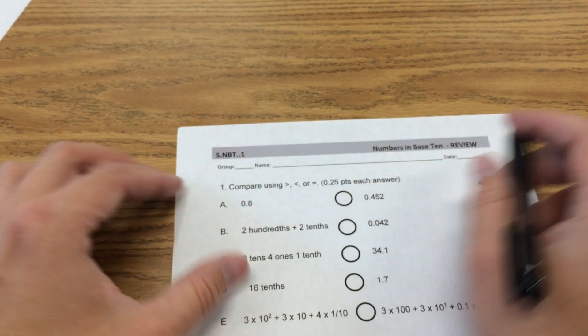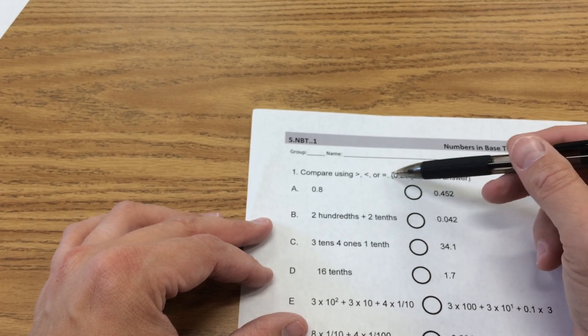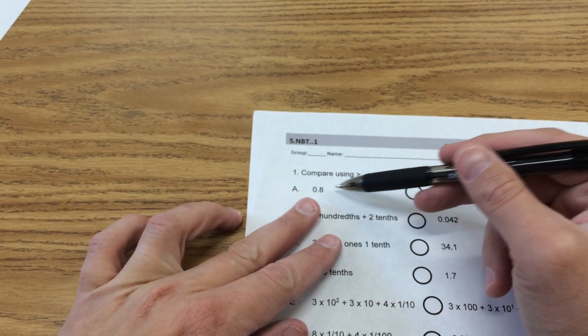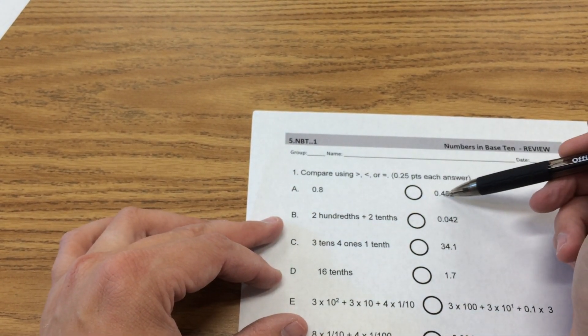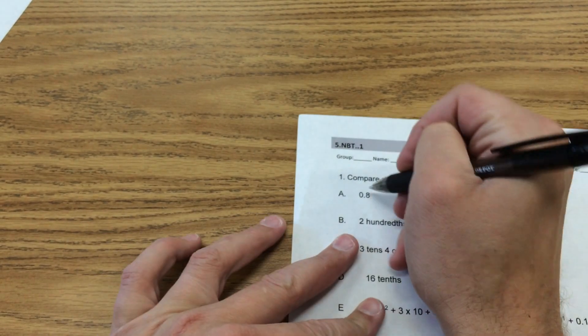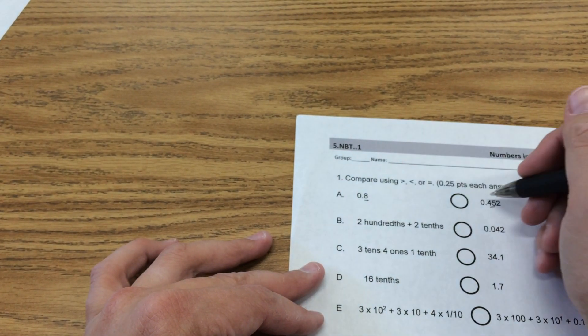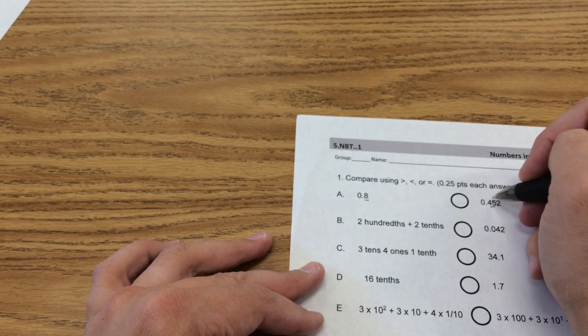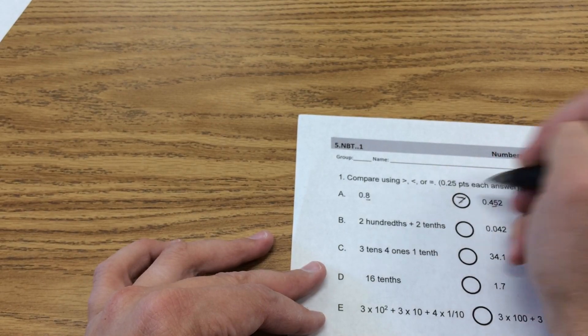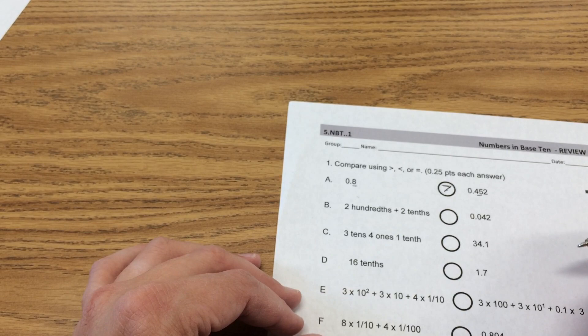Hello there. Let's see. Compare using greater than, less than, or equals: 8 tenths and 452 thousandths. I'm just going to look at the tenths place because they both have a zero in the ones place. 8 tenths is much bigger than 4 tenths, so it has to be this one. This is closer to being the number one than that is.